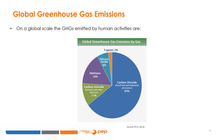Nitrous oxide, N2O: agricultural activities such as fertilizer use are the primary source of N2O emissions, and fossil fuel combustion also generates N2O. Fluorinated gases, F-gases: industrial processes, refrigeration, and the use of a variety of consumer products contribute to emissions of F-gases, which include hydrofluorocarbons, HFCs; perfluorocarbons, PFCs; and sulfur hexafluoride, SF6. The figure clearly shows that emissions coming from CO2 within fossil fuel and industrial processes are the major contributors, representing 65%, to GHGs globally.